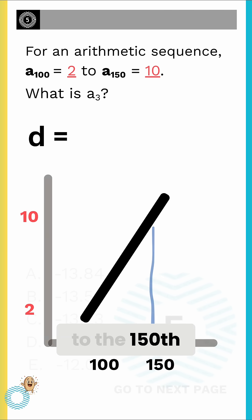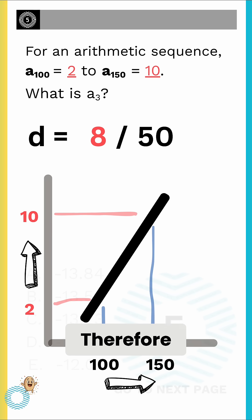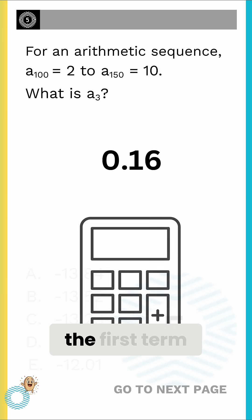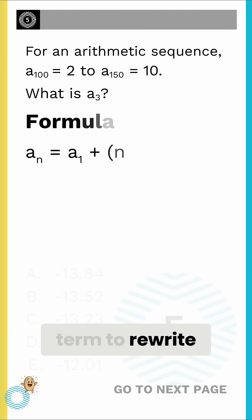From the 100th to the 150th term, the value increases from 2 to 10, an increase of 8 across 50 terms. Therefore, the difference is 8 divided by 50, which equals 0.16. Now, instead of finding the first term, we can use any known term to rewrite the formula.